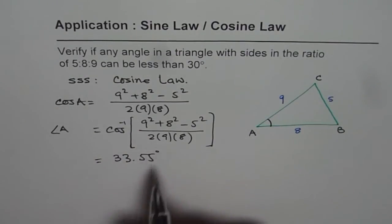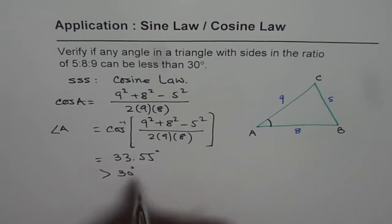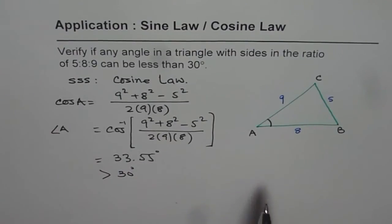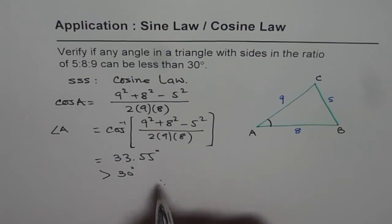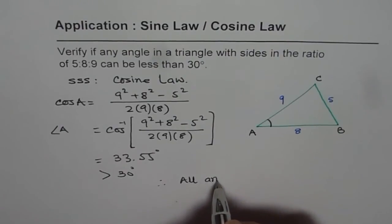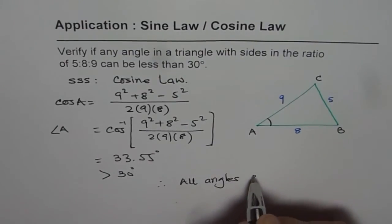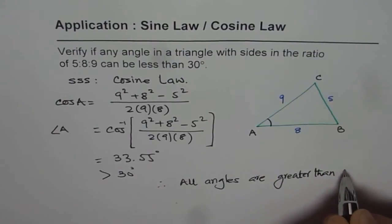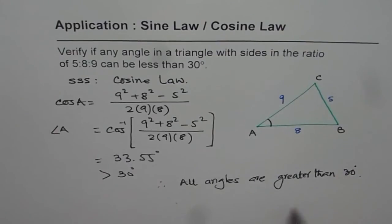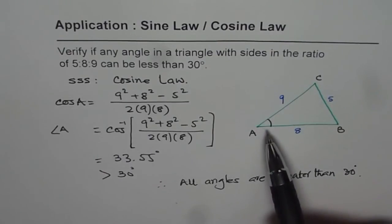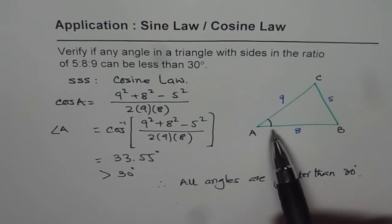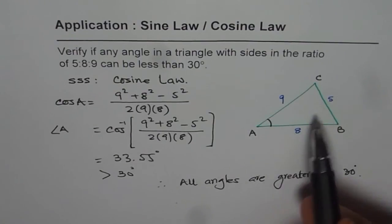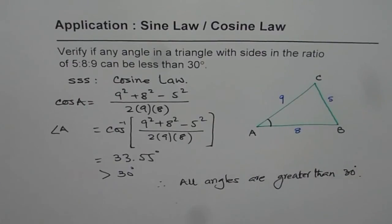So we get 33.55 as angle A. That is greater than 30 degrees. Therefore, we can say every angle in this triangle is greater than 30 degrees. So all angles are greater than 30 degrees. It is important to understand that we should find just the one minimum angle — the angle opposite to the shortest side — right? That helps to do it faster.